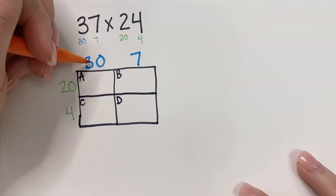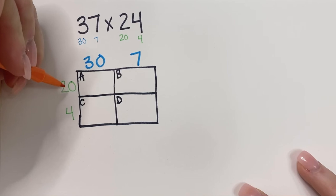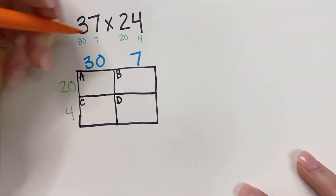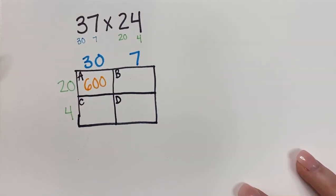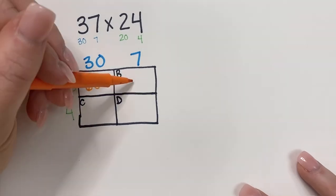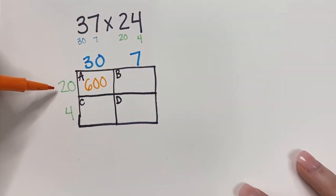What I'm going to do first is I'm going to do 30 times 20. I know 3 times 2 is 6, and then I just add the two zeros. Next I'm going to do the next. It doesn't matter which box, but I'm going to do box B.